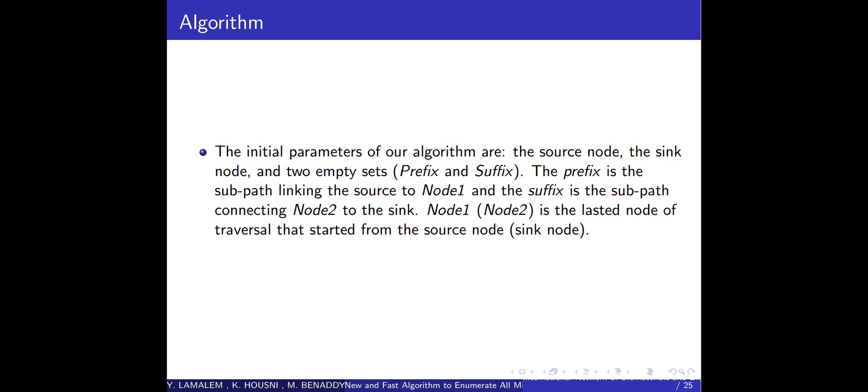The initial parameters of our algorithm are the source node, the sink node, and two empty sets prefix and suffix. The prefix is the subpath linking the source node to node1 and the suffix is the subpath connecting node2 to the sink node T. Node1 or node2 is the last node after a traversal that starts from the source node or the sink node.